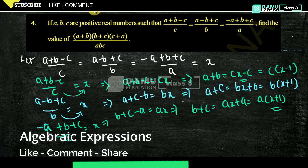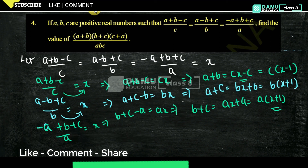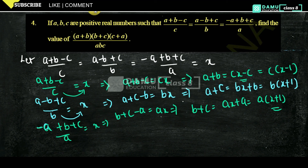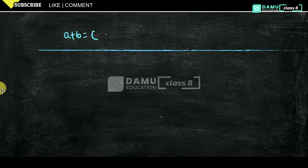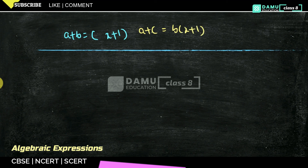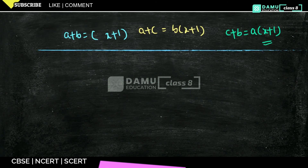So summarizing, the three derived equations are: a plus b equals c times (x plus 1), a plus c equals b times (x plus 1), and b plus c equals a times (x plus 1). Now our expression to evaluate is (a plus b) into (b plus c) into (c plus a), whole divided by a, b, c. Let's substitute these values.